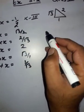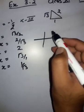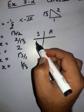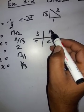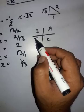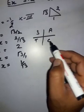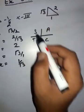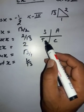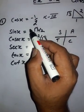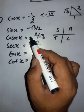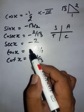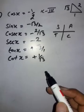x lies in the 3rd quadrant. According to the ASTC formula: in the 1st quadrant all are positive; in the 2nd, sin and cosec; in the 3rd, tan and cot; in the 4th, cos and sec. Since x is in the 3rd quadrant, tan and cot are positive; sin, cosec, cos, and sec are all negative.